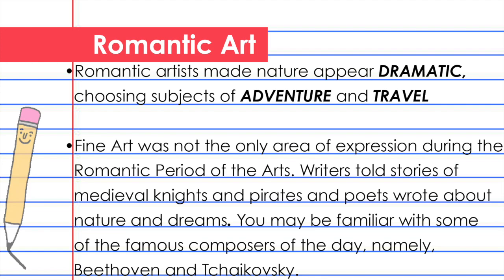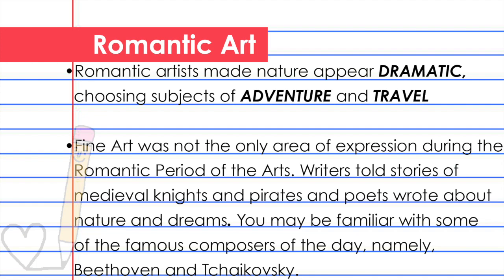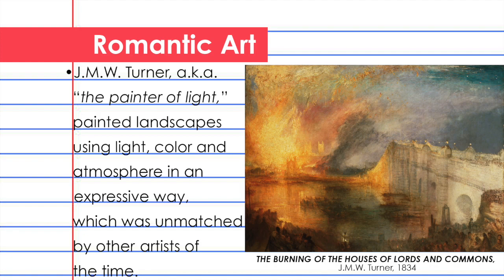Romantic artists made nature appear dramatic, choosing subjects of adventure and travel. Fine art was not the only area of expression during the Romantic period — writers told stories of medieval knights and pirates, and poets wrote about nature and dreams. You may be familiar with some of the famous composers of the day, namely Beethoven and Tchaikovsky.